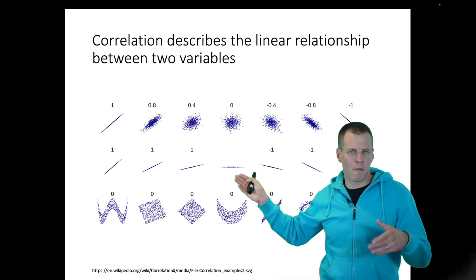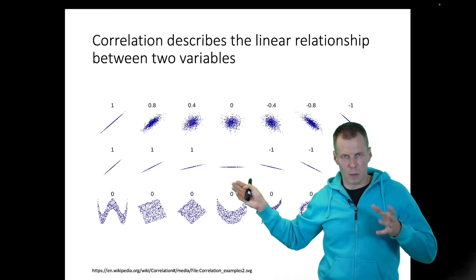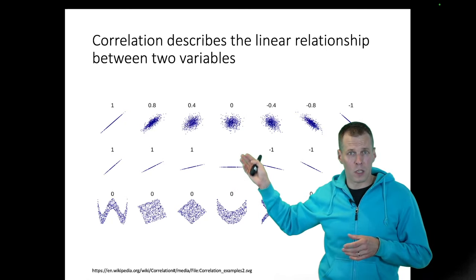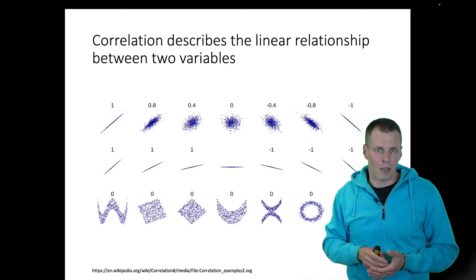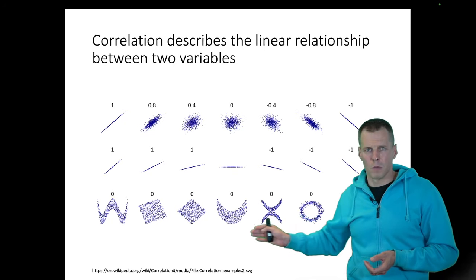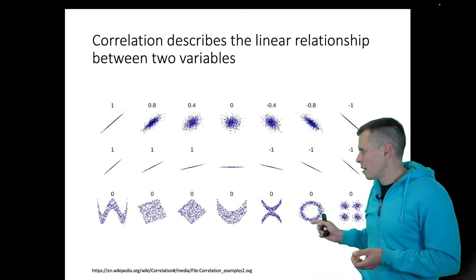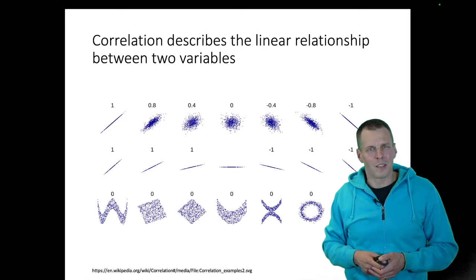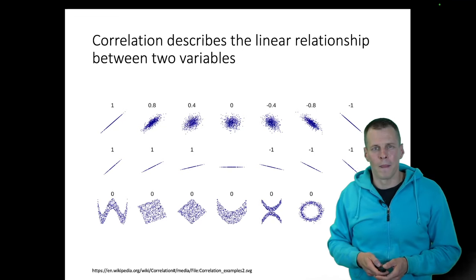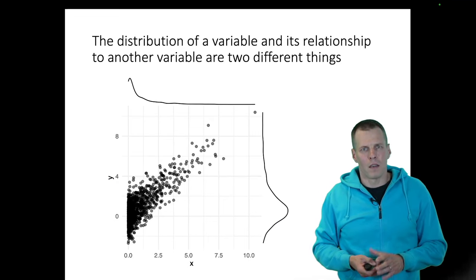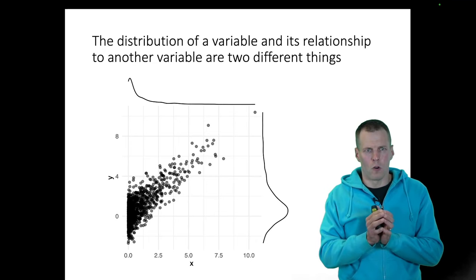Correlation doesn't tell us how much one variable increases as a function of another — it just tells us how linear the relationship is. Correlation does not exist when a variable is constant because correlation measures covariation, and a constant cannot co-vary. All these statistical relationships with zero correlations show that even a strong O-shaped relationship is not linear, so the correlation is zero. Whether variables are linearly dependent does not depend on the distribution of the variables.